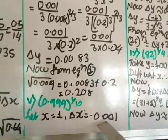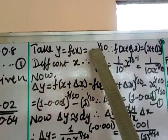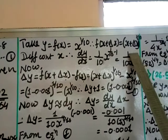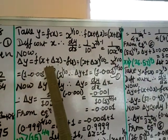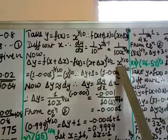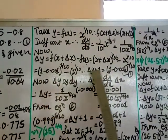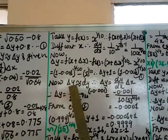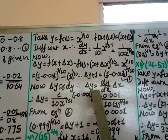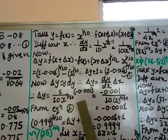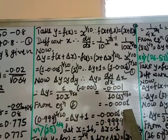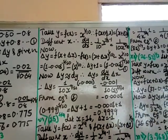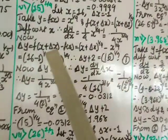Question 5: 0.999^(1/10). Take x = 1 and δx = -0.001. Define y = x^(1/10); dy/dx = (1/10)x^(-9/10). Using the δy formula, put values of x and δx: δy + 1 = 0.999^(1/10) (equation 1). Then δy = (1/10)x^(-9/10) × (-0.001), with x = 1: δy = -0.0001. Substituting in equation 1: 0.999^(1/10) ≈ -0.0001 + 1 = 0.9999.